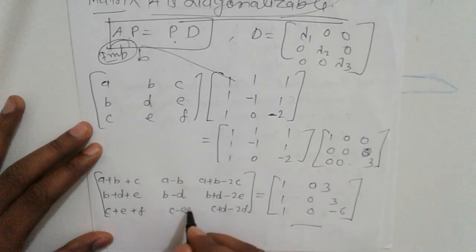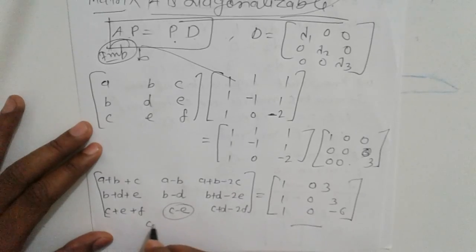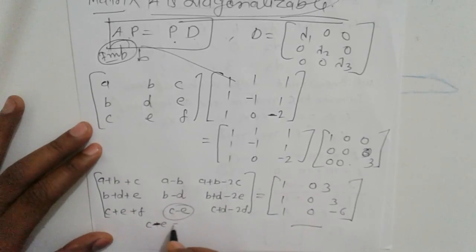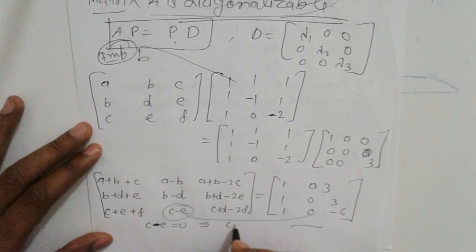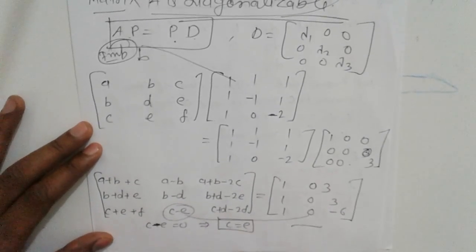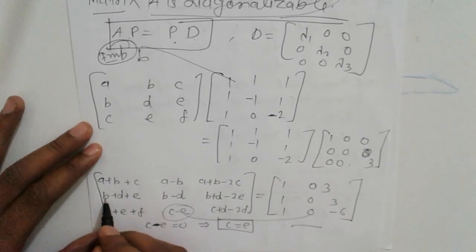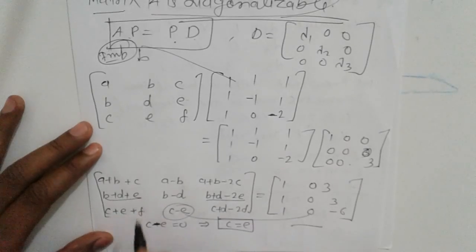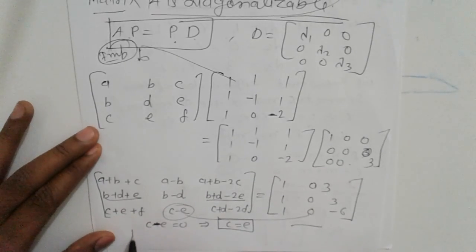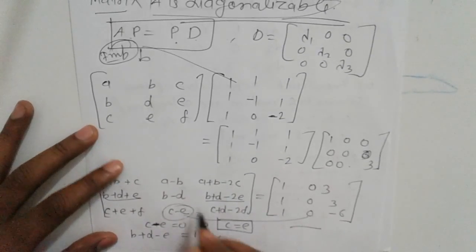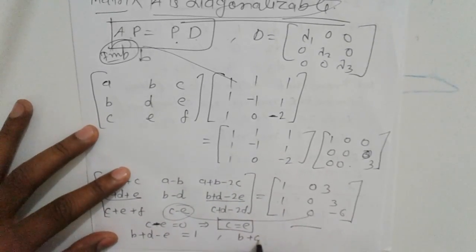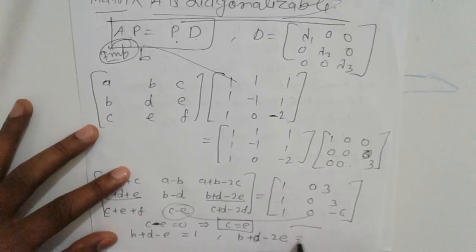From comparing corresponding elements: c + e - c = 0, corresponding to the matrix entries. This implies c = e. Next, to find e: a + b + d minus 2e = e equals 3, from the corresponding element comparison.